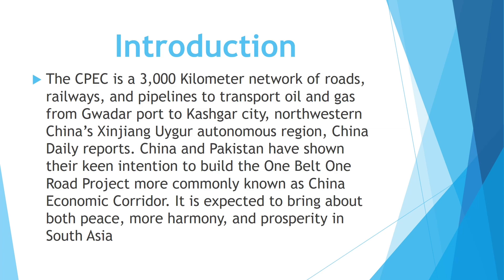It runs from Gwadar port to Kashgar city. Kashgar is an oasis city in the Tarim Basin in northwest China, with an area of about 88,000 square kilometers, situated in northwestern China's Xinjiang Uyghur Autonomous Region. China and Pakistan have shown their intention to build the One Belt, One Road project, more commonly known as the China-Pakistan Economic Corridor. It is expected to bring about both peace, harmony, and prosperity in South Asia.